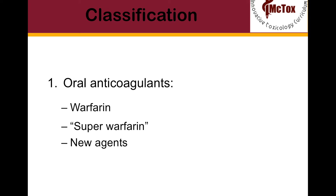Oral anticoagulants contain warfarin, warfarin-like, and the long-acting superwarfarins, all of which inhibit the vitamin K-dependent clotting factors — factors 2, 7, 9, and 10. Therefore, vitamin K is considered a classic antidote for this category. In addition to warfarin, there are newly released oral anticoagulant drugs that target either thrombin, like dabigatran, or target activated factor X, like rivaroxaban.